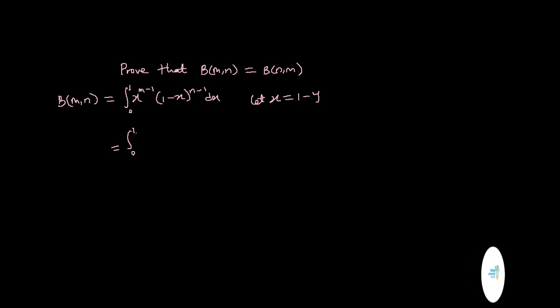This will be the integral from 0 to 1. Instead of putting X you are going to put 1 minus Y raised to the power of M minus 1. Then this will be 1 minus, instead of putting X you have 1 minus Y, plus minus minus will give plus Y raised to the power of N minus 1. Instead of dX now we are going to put dY.